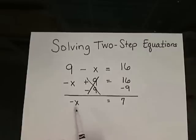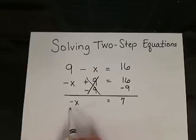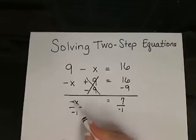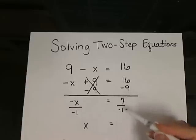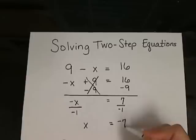Now we need to get rid of the negative 1 that's being multiplied times the x. And in order to do that we undo multiplying by negative 1 by dividing by negative 1 on both sides. Well a negative 1 divided by a negative 1 gives us a positive 1, leaving us with x equals 7 divided by negative 1 which gives us negative 7.